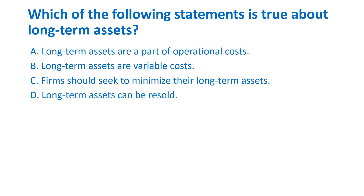The correct answer is D. Long-term assets can be resold — that is the very reason they are classified as long-term assets. A is false: long-term assets are part of startup costs, not operational costs. B is false: only operational costs are classified into variable and fixed — long-term assets don't apply. C is false: firms should not seek to minimize long-term assets; they should manage the relationship between cost and value, not cut quality by avoiding good equipment.